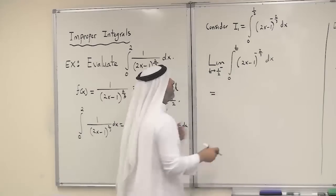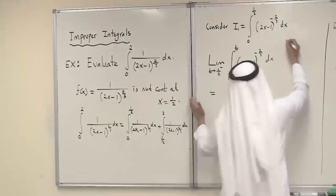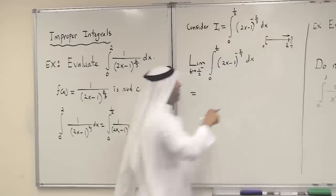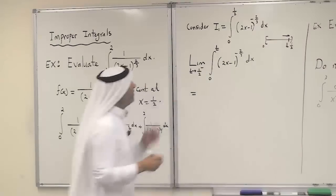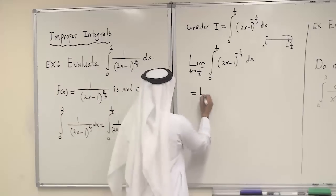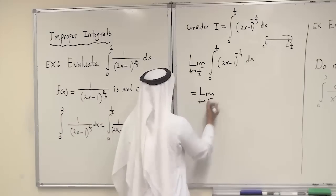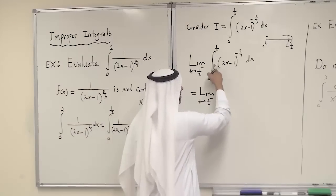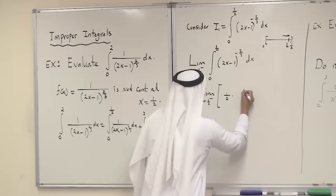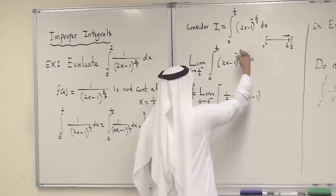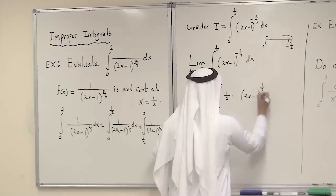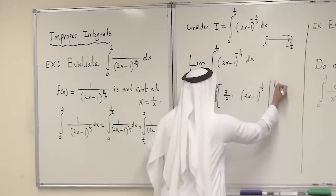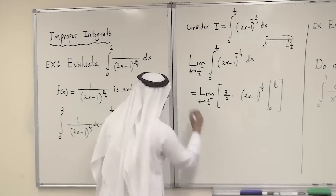We can use the fundamental theorem of calculus since everything is continuous from 0 to t. The antiderivative of (2x−1)^(−2/3): using the chain rule, differentiate 2x−1 to get 2. So the antiderivative is (1/2) times (2x−1)^(1/3) divided by (1/3), which equals (3/2)(2x−1)^(1/3). We evaluate this from 0 to t. Taking the constant (3/2) outside and evaluating the limit as t approaches 1/2 from the left.